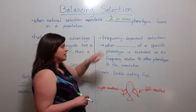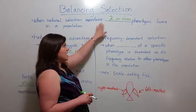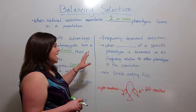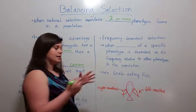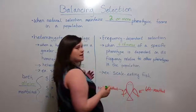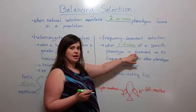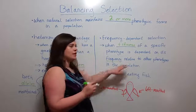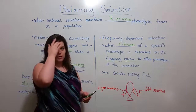Now let's talk about frequency-dependent selection, which is another mechanism that maintains two or more phenotypic forms in a population. The same idea of fitness is at play. Frequency-dependent selection is when the fitness of a specific phenotype is dependent on its frequency in the population — specifically its frequency relative to other phenotypes in the population.